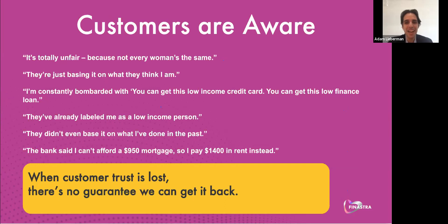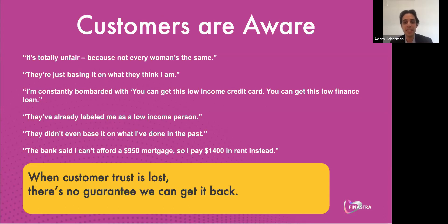Our customers are aware when customer trust is lost, we really can't get it back. Here's a few quotes from individuals who have experienced algorithmic bias firsthand: 'It's totally unfair because not every woman is the same.' 'They've already labeled me as a low income person.' 'The bank said I can't afford a $950 mortgage, so I pay $1,400 rent instead.' Our customers are aware algorithmic unfairness occurs, and if we are to put lending models that affect the lives of our clients and customers, we need to ensure we test them for fairness.